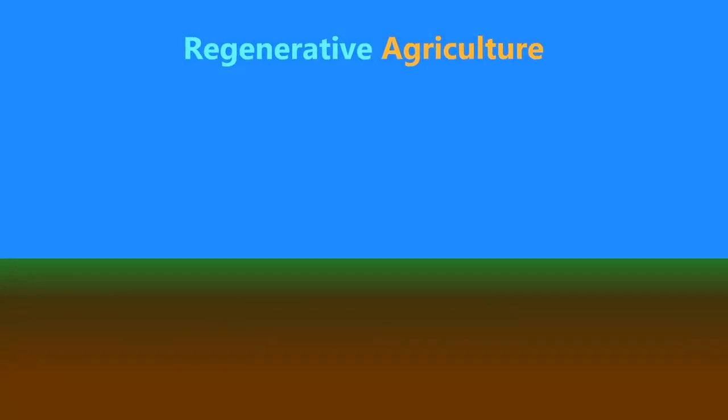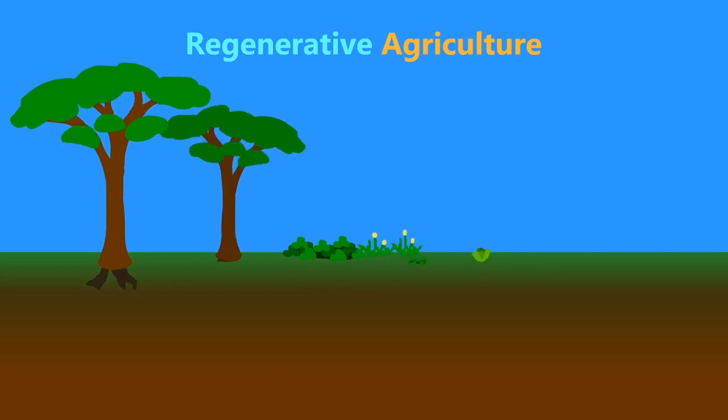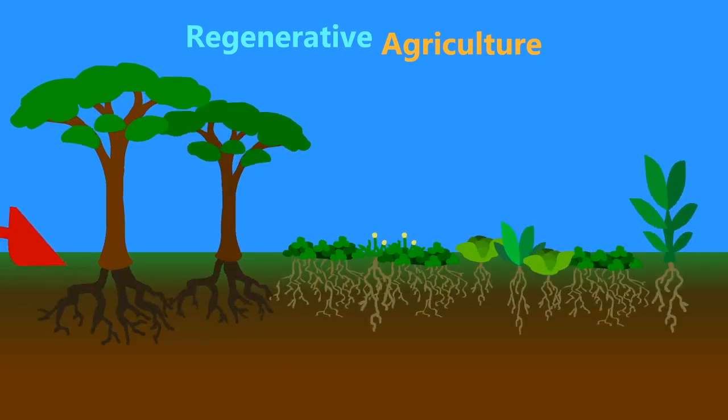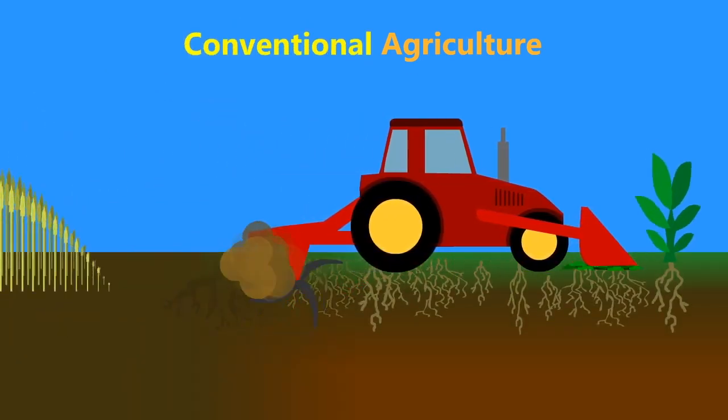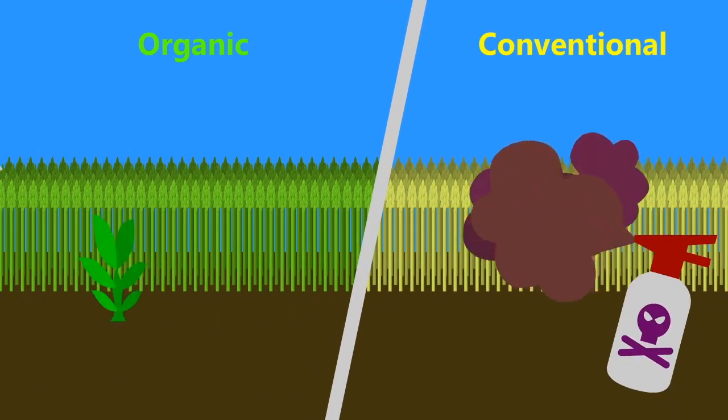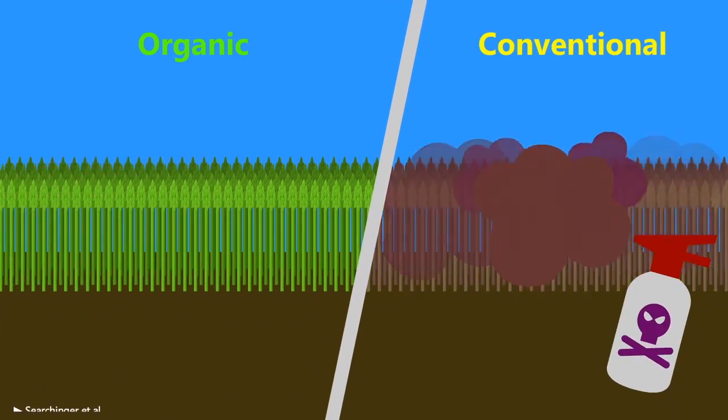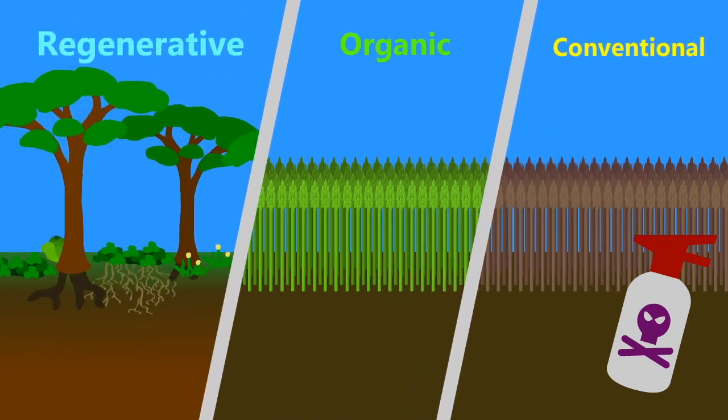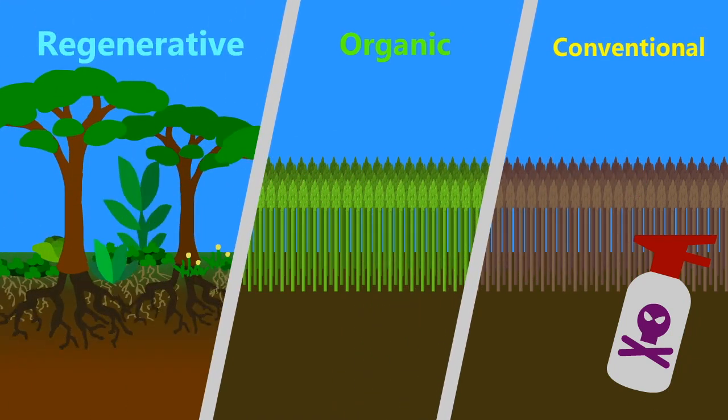Regenerative agriculture is a set of farming practices that increase biodiversity and soil organic matter. Currently, most agricultural practices are devastating to biodiversity. Even organic agriculture, while not as bad, still does more harm than good. Regenerative agriculture is a way to reverse this trend to actually make a positive impact on the land.